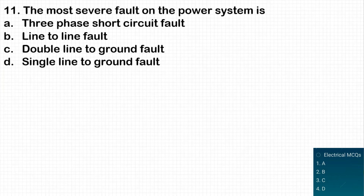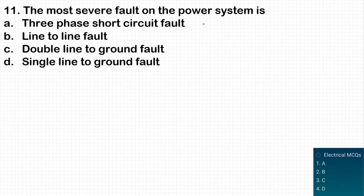The next question is about the most severe fault on a power system. When a three-phase short circuit fault occurs, the maximum amount of current is drawn from the source. This is the most severe fault, so three-phase short circuit fault — option A — is the correct answer.